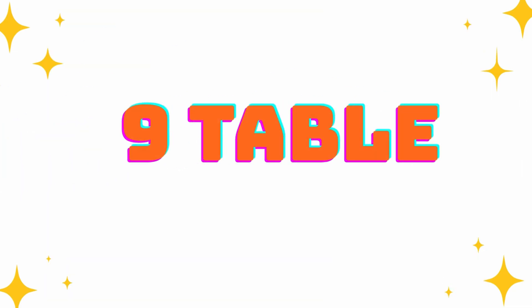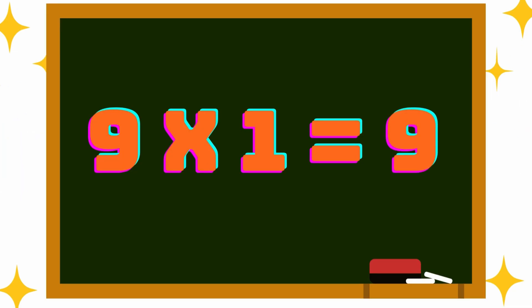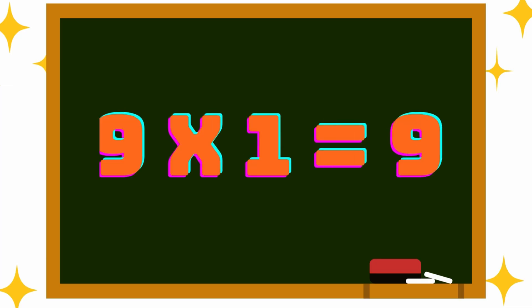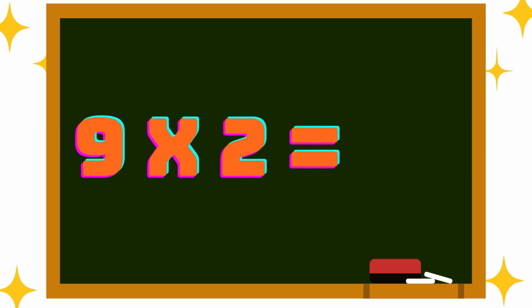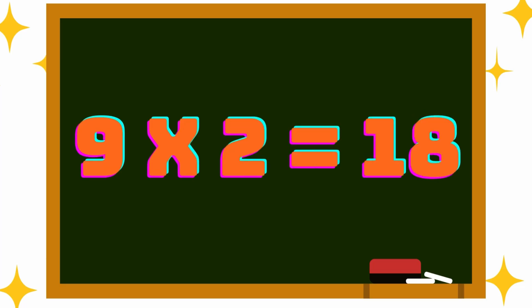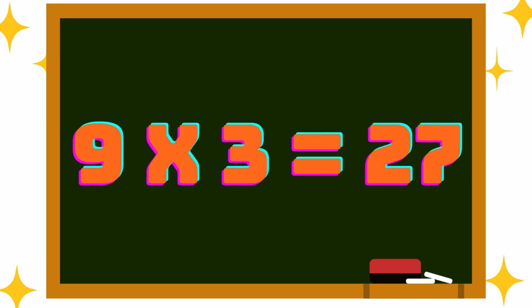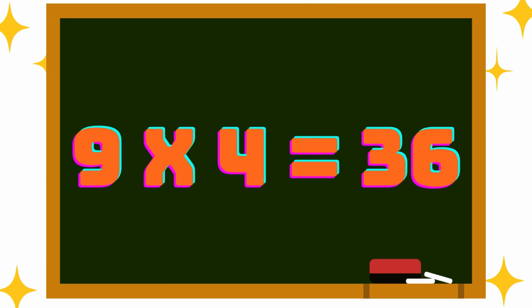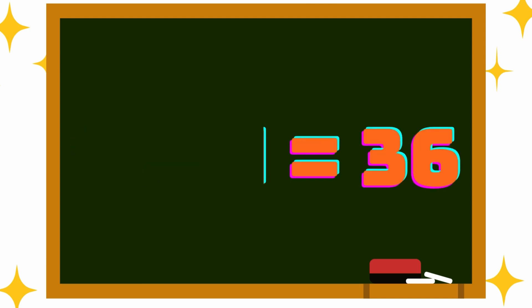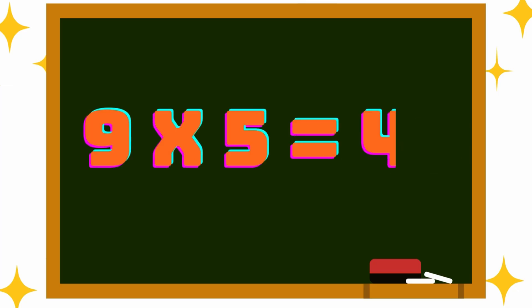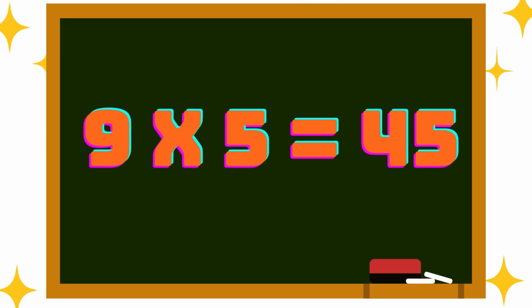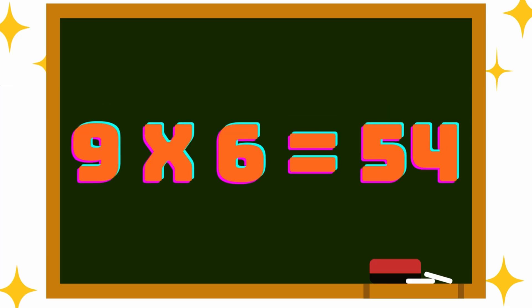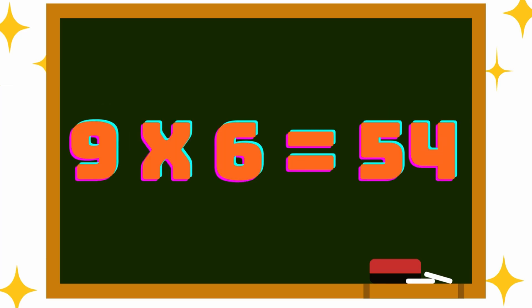Next one, 9th table. 9 ones are 9. 9 twos are 18. 9 threes are 27. 9 sixes are 54.